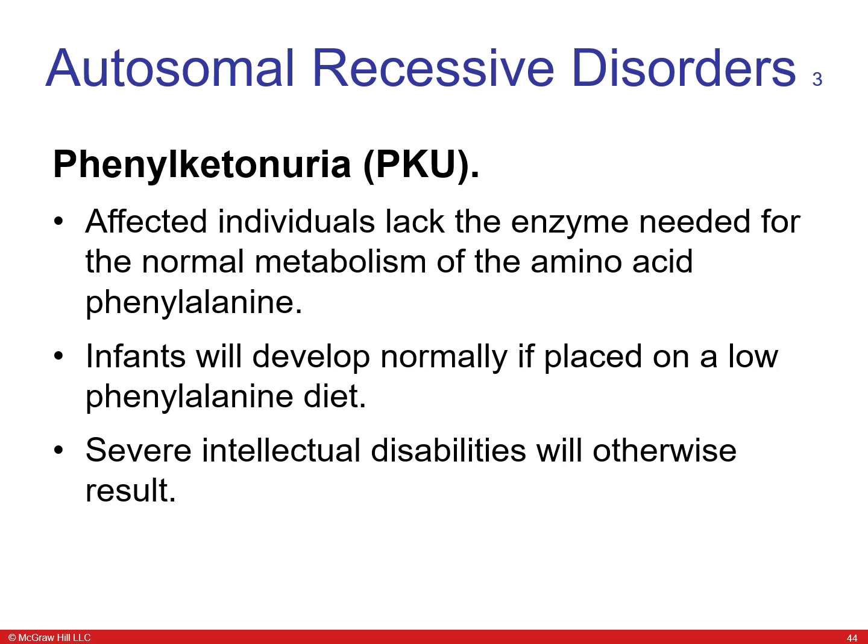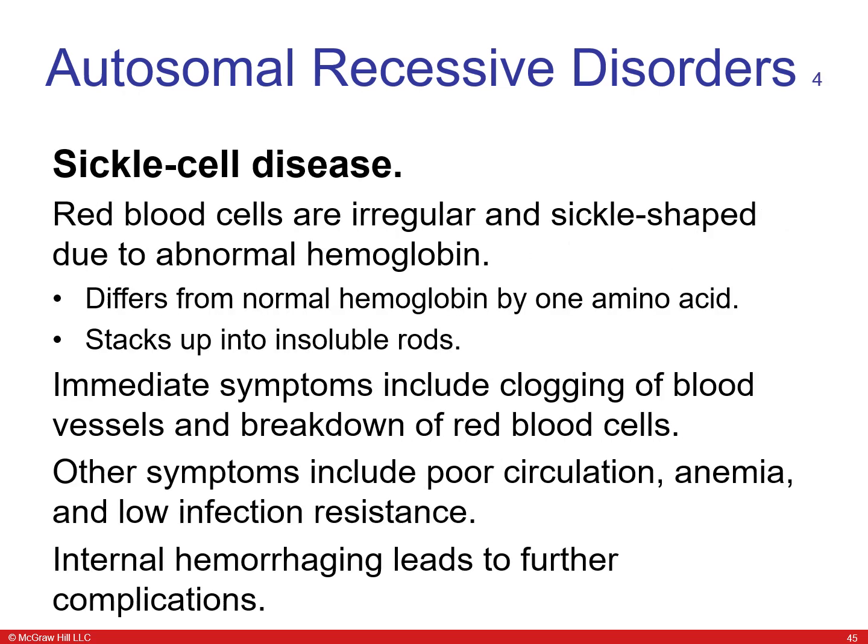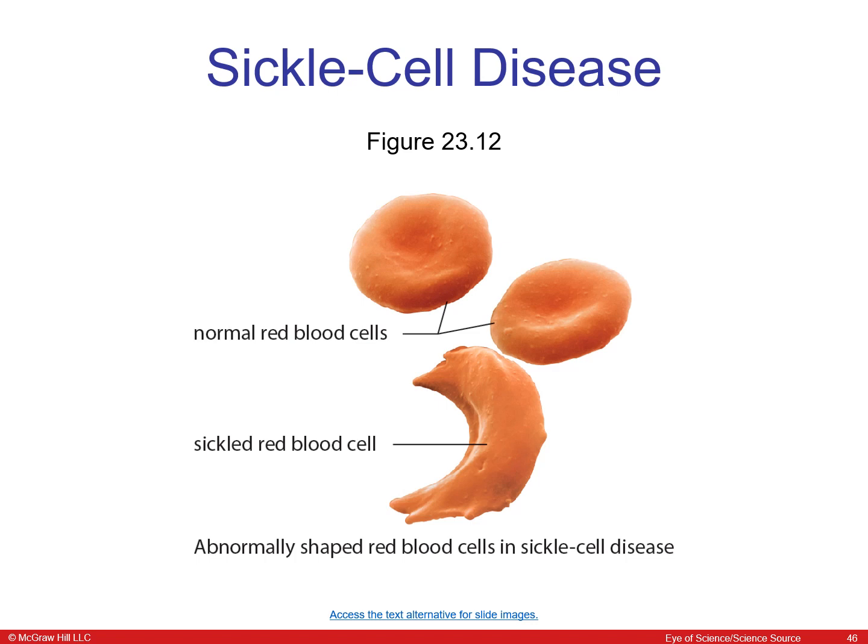Another autosomal recessive disorder is phenylketonuria or PKU. Affected individuals lack an enzyme needed for the metabolism of phenylalanine. Infants will develop normally if placed on a low phenylalanine diet, but severe intellectual disabilities will otherwise result. Sickle cell disease is another autosomal recessive disorder where red blood cells are irregularly sickle-shaped due to abnormal hemoglobin, causing clogging of blood vessels, breakdown of red blood cells, poor circulation, anemia, and low infection resistance.